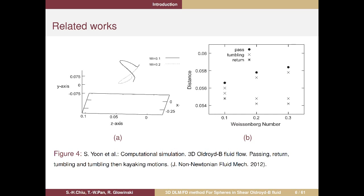In 3D Oldroyd-B fluid simulations, they found, in addition to passing and return motion, toggling and kayaking motions. Picture A shows the trajectory for kayaking motion, and picture B shows a phase diagram with respect to the initial particle positions and Weissenberg number, indicating where you find toggling, passing, or return motions. In this talk, I will show investigations of sphere behavior in 3D Oldroyd-B fluid.